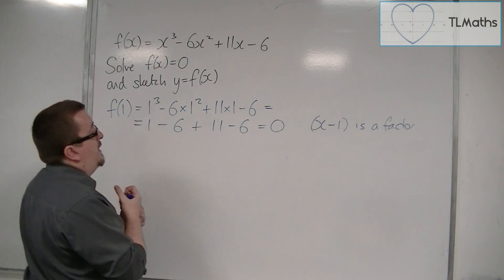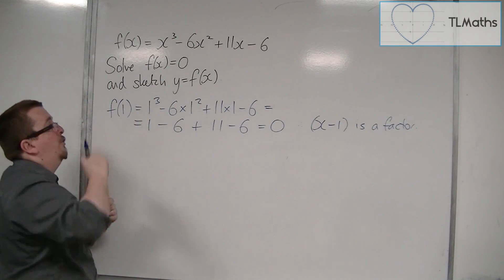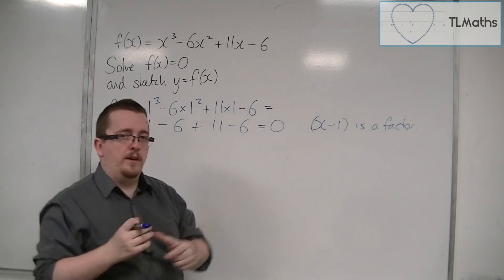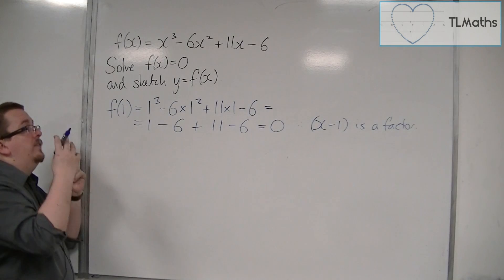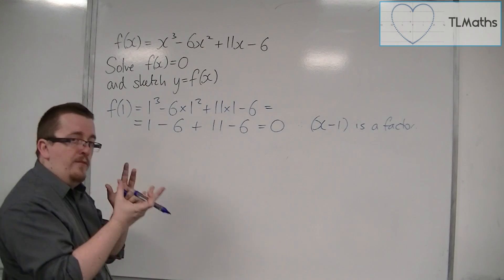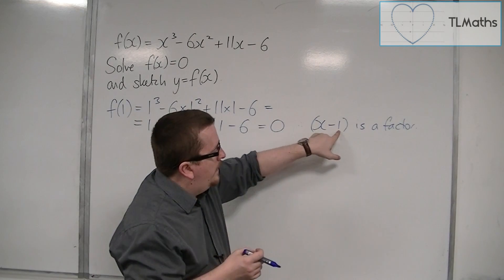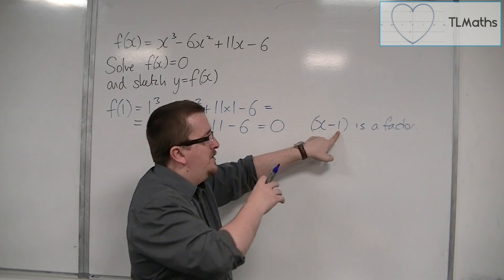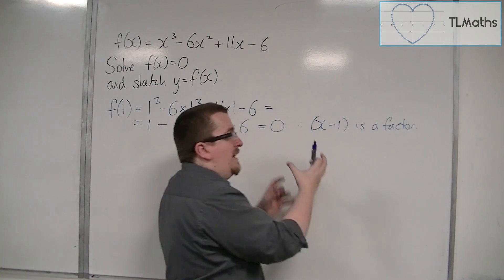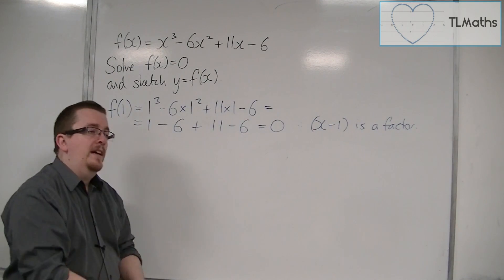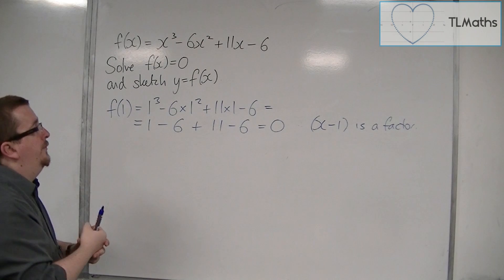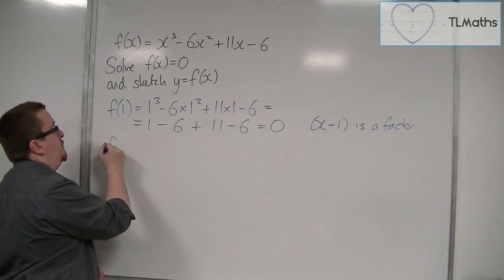So next, what am I going to do? I'm going to be looking for factors of 6. So I explained that the 3 factors, if there are 3 factors, then the 3 numbers here, so we had a minus a, a minus b, and a minus c, they're going to multiply to make minus 6. So I'm looking for only factors of 6. So I might try 2 next.